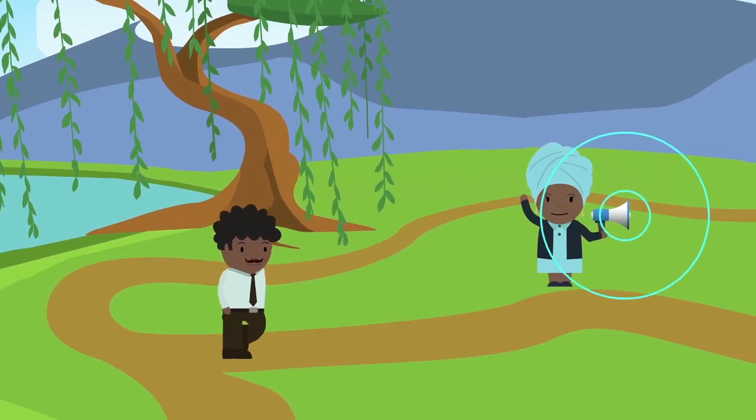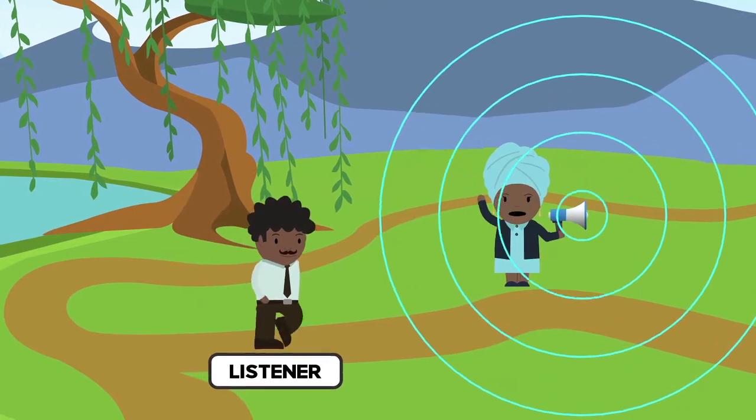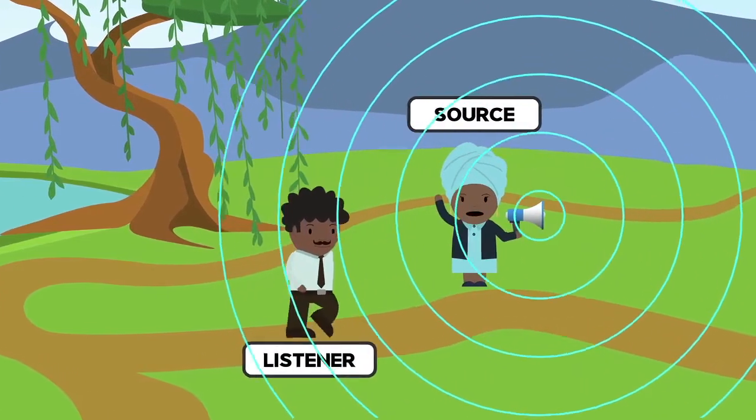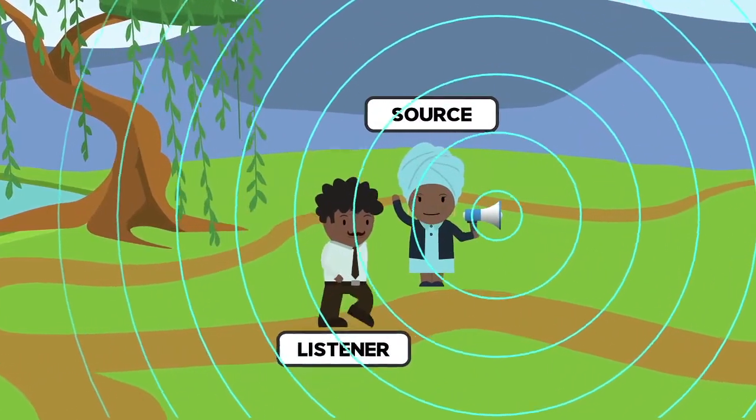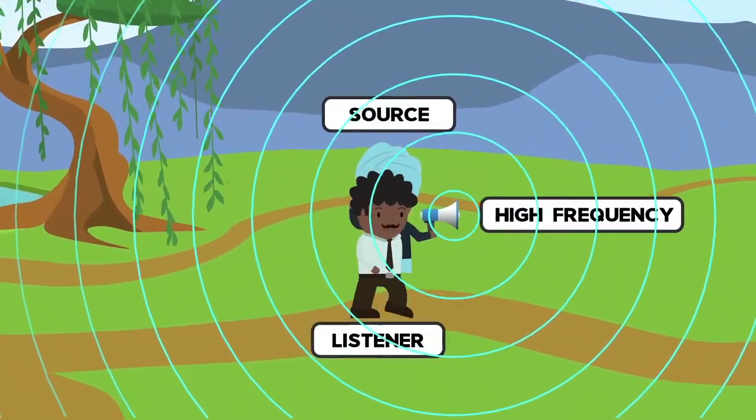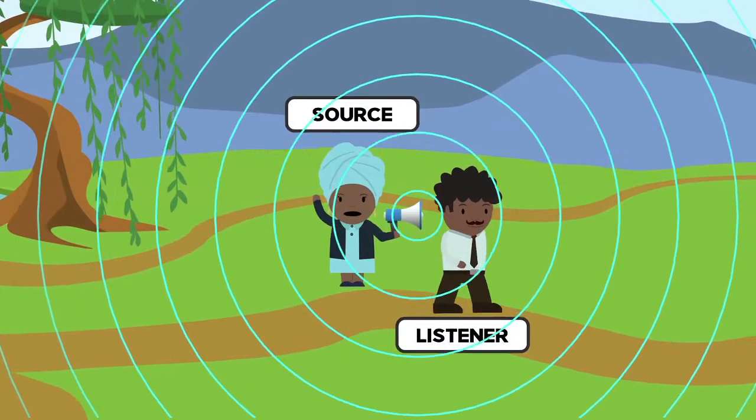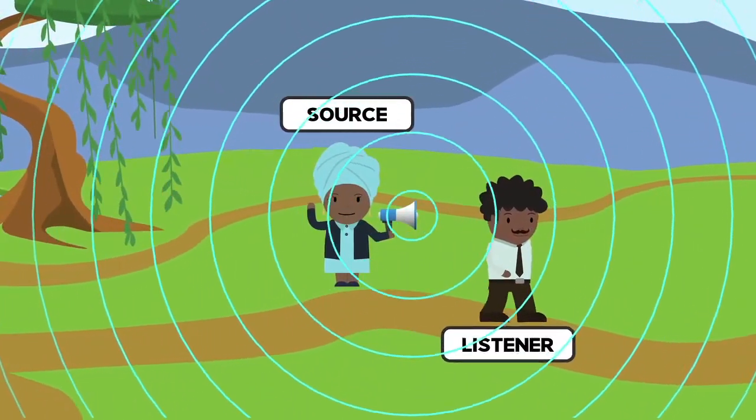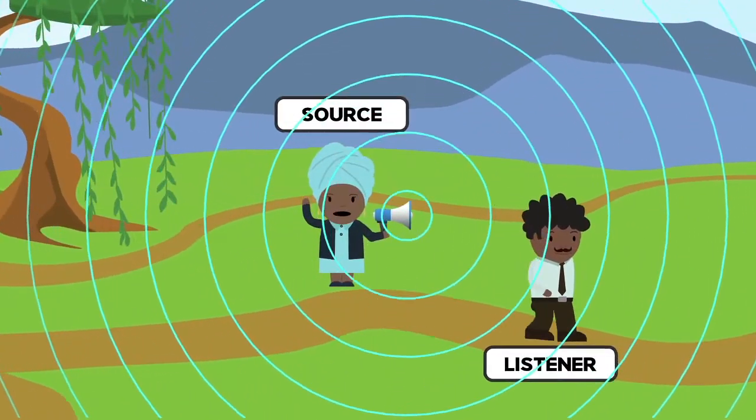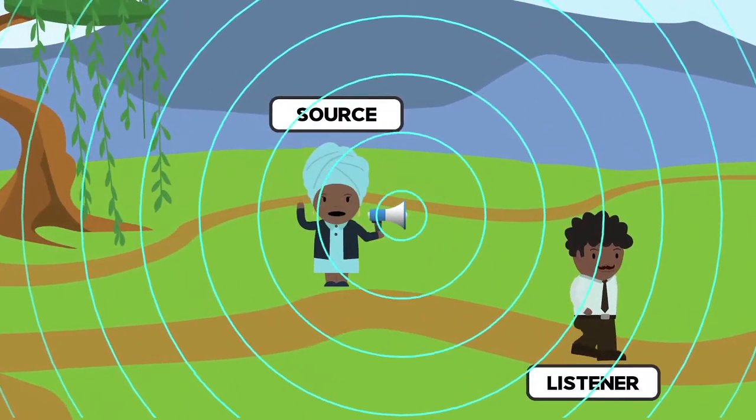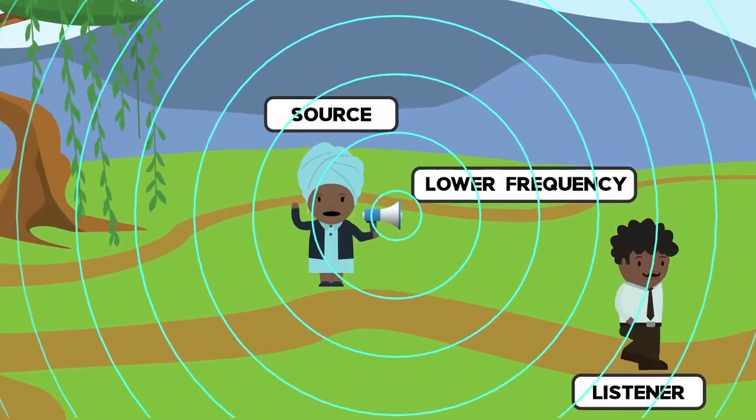But what about a stationary source and a moving listener? That's also going to change things. If the observer or listener moves towards the source, they move through the waves faster, experiencing a higher frequency too. And if they are moving away from the source of the waves, they are actually running away from the moving waves. That means they would experience a much lower frequency.